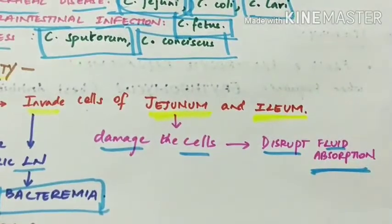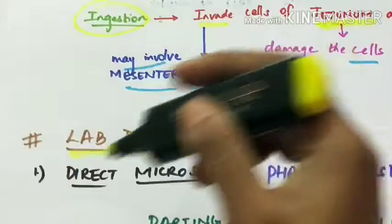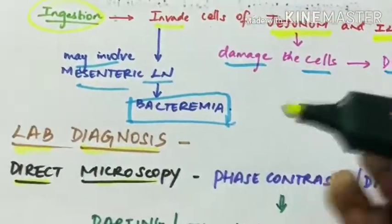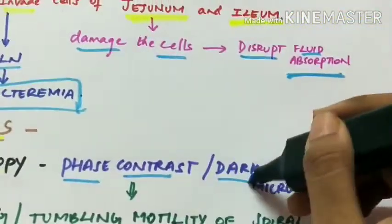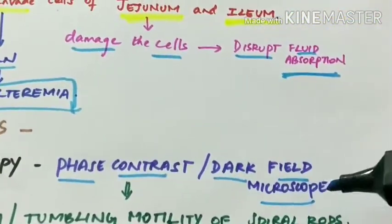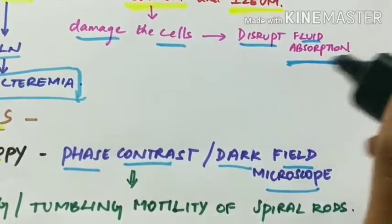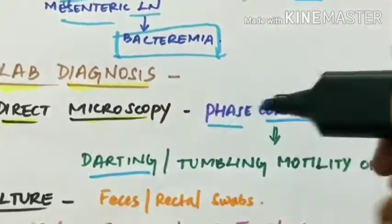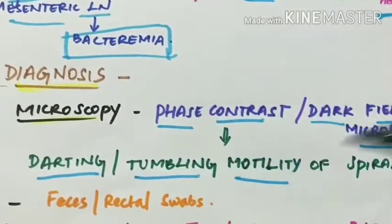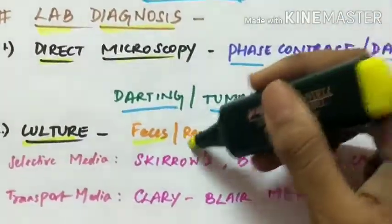For lab diagnosis, the first step is direct microscopy. Campylobacter is visualized under a phase contrast microscope or dark field microscope, since they are very slender and cannot be easily seen under standard light microscopy. Under phase contrast or dark field microscopy, they show characteristic darting or tumbling motility.